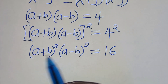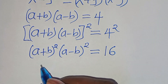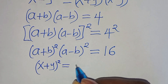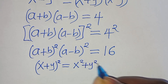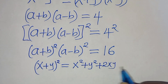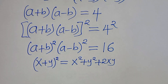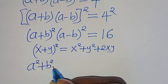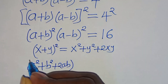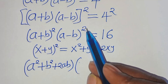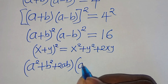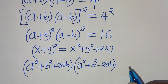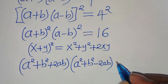Now, a plus b raised to the power of 2 is in the form x plus y squared, which expands as x squared plus y squared plus 2xy. Applying this identity, we get a squared plus b squared, multiplied by a minus b squared, which expands as a squared plus b squared minus 2ab, and this equals 16.